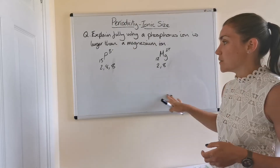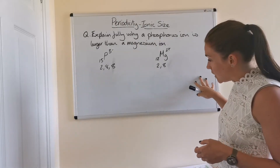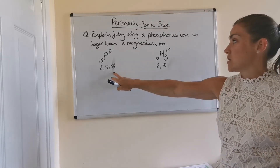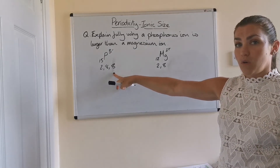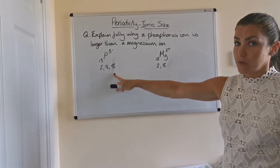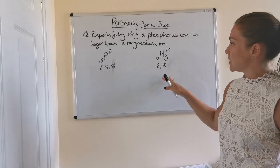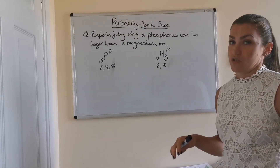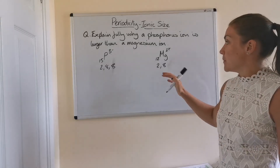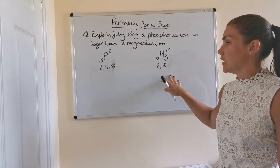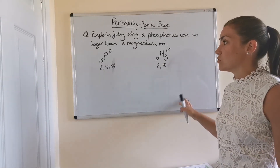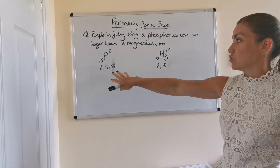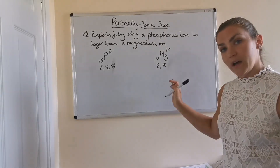In terms of writing your final explanation: the phosphorus ion is larger than the magnesium ion because it has one extra occupied energy level. You can also reason it the other way and say that the magnesium ion is smaller than the phosphorus ion because it has one less occupied energy level — either way is fine. The important thing is that you also show what the structures of the two ions are first, because writing the sentence alone wouldn't be enough to get full marks — you need to fully explain it.